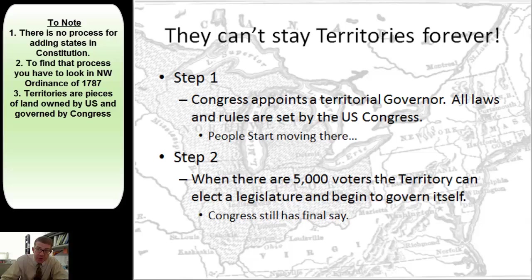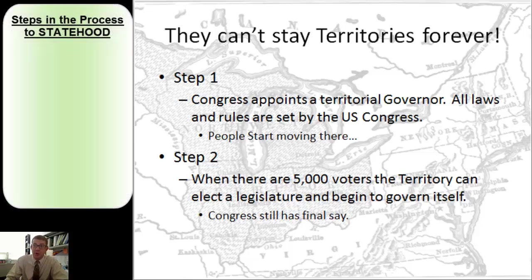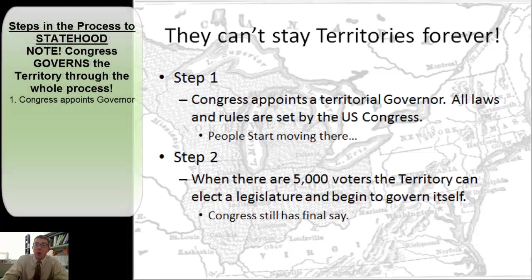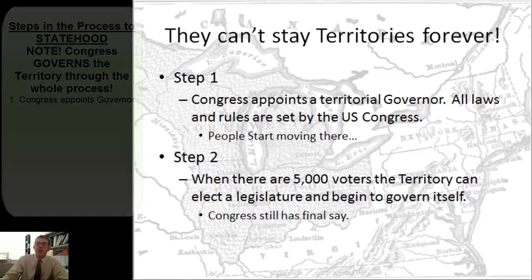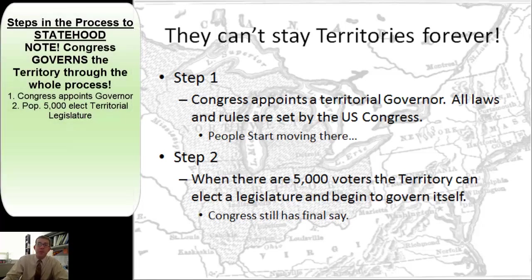We don't want territories to stay territories forever, so here are the steps a territory goes through to move toward statehood. You start as a territory — Congress says you're a territory, Congress governs you, and starts you on this process. The first step is that Congress will appoint a governor, and all the rules and laws are established by Congress in Washington D.C. Once there are 5,000 voters in a territory, they can begin to elect their own territorial legislature and start to govern themselves. However, anything they do or any laws they pass can be undone by Congress.